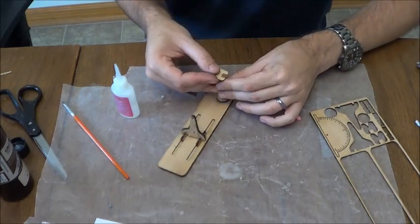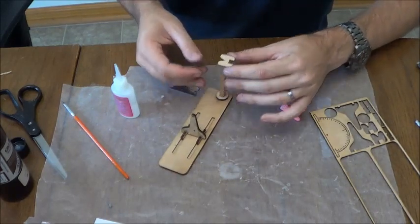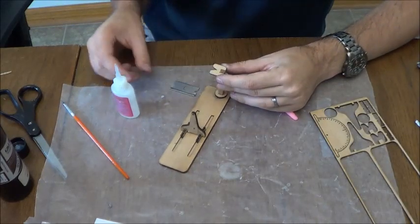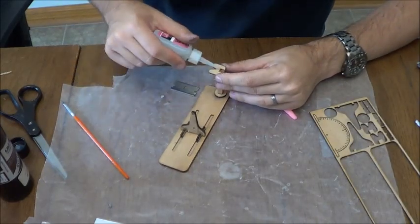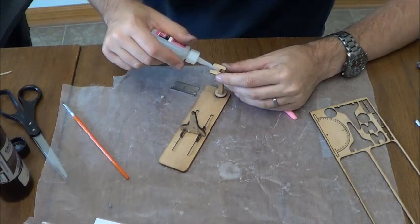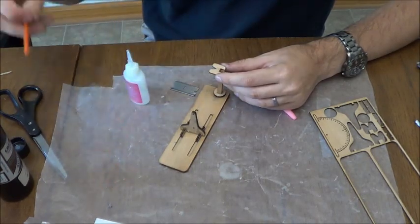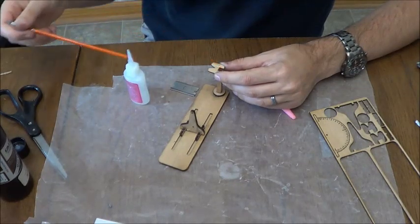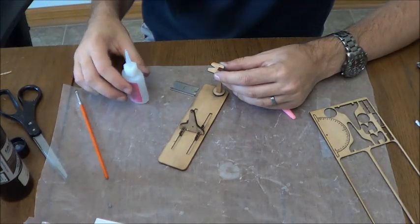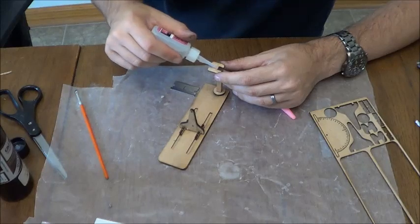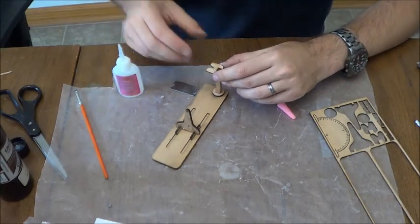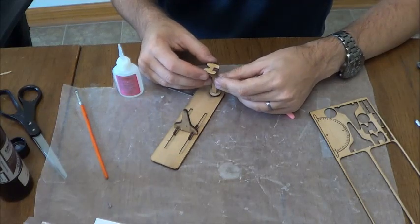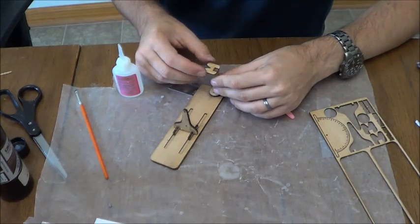Next thing is we come up here to our mast. We take these pieces right here. We take one and we're going to mount it up at the top. Get that with a little bit of accelerator. Try not to glue it to yourself like I did. There we go.